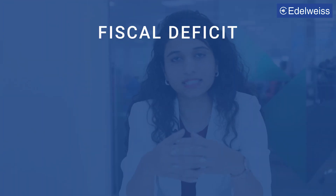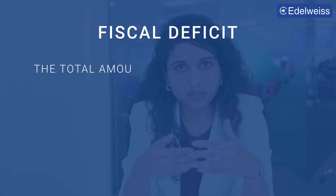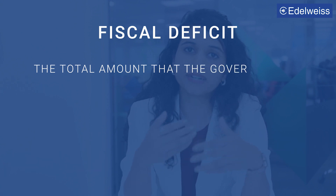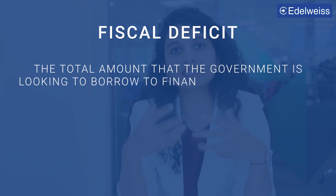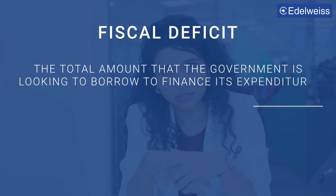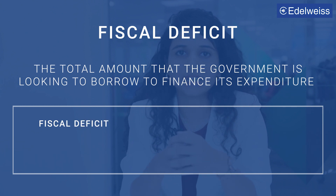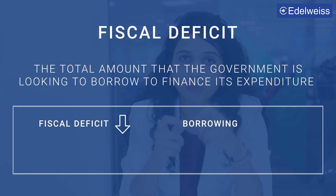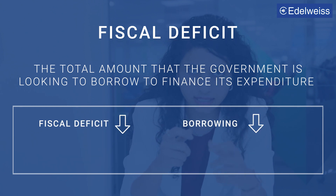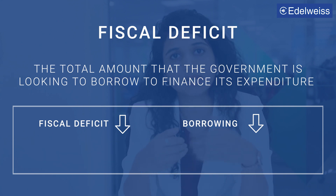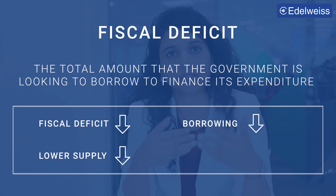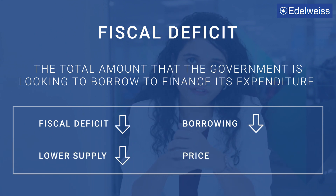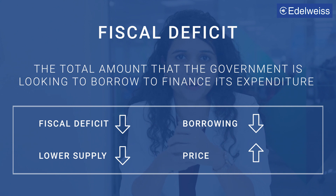The second important point is fiscal deficit. Fiscal deficit tells us the total amount that the government is looking to borrow to finance its expenditure. When the fiscal deficit is low, it means that the government will borrow less. This will reduce the supply of government securities in the market and therefore increase their price.